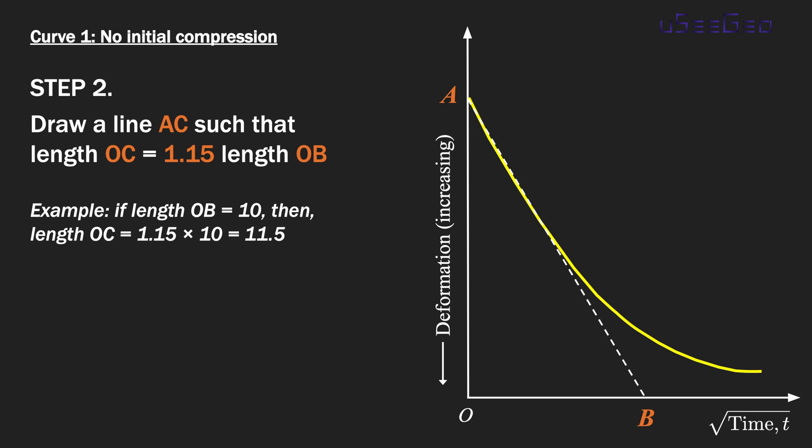Step number two is to draw a line AC such that the length OC is 1.15 times the length of OB. For instance, if B is 10, then OC will be 11.5. So you plot this line AC. This is step number two.